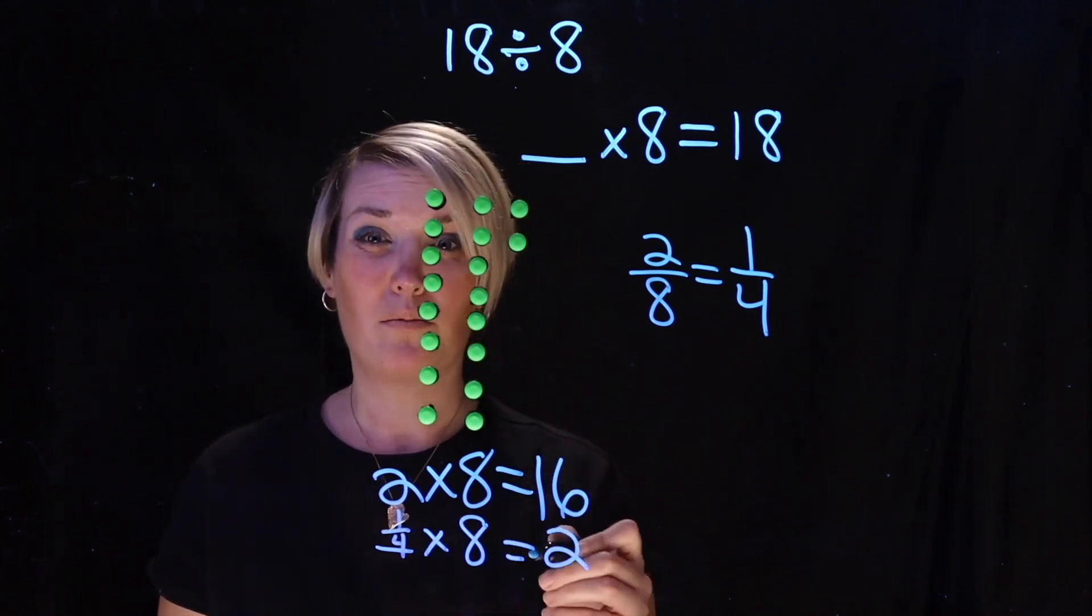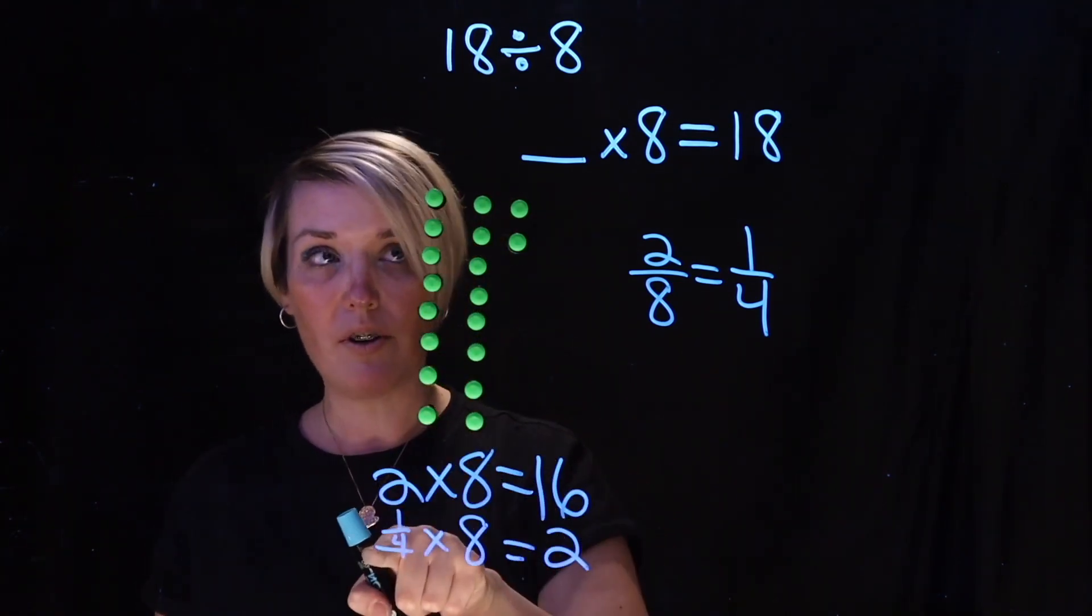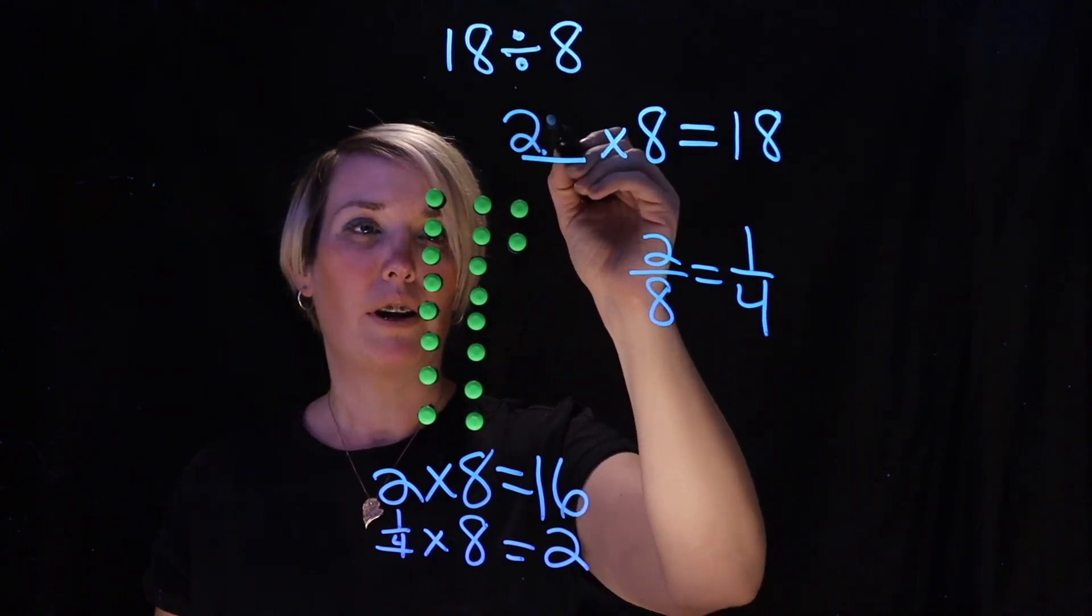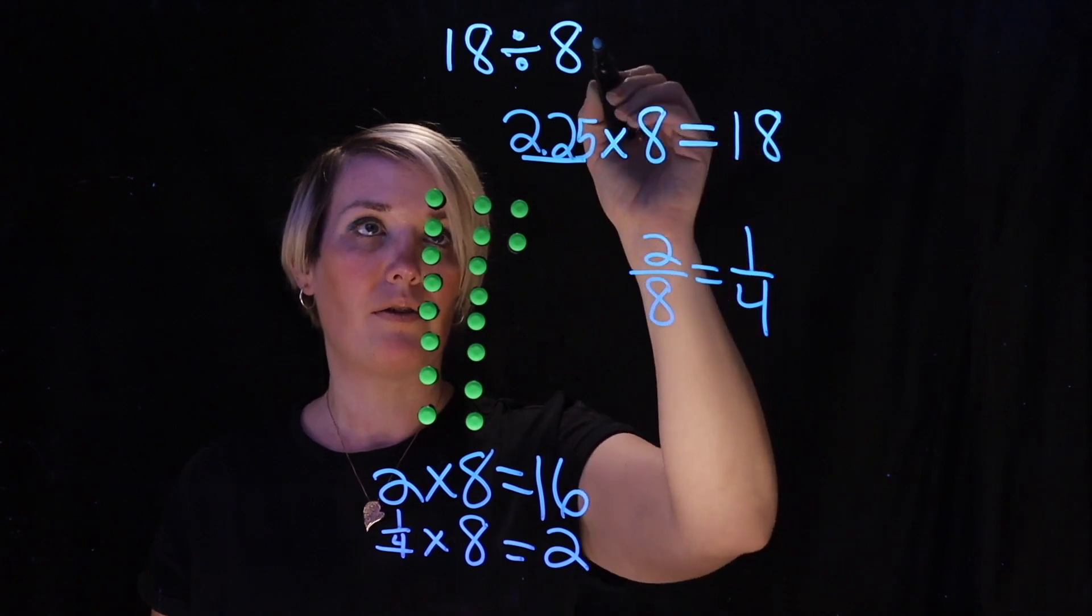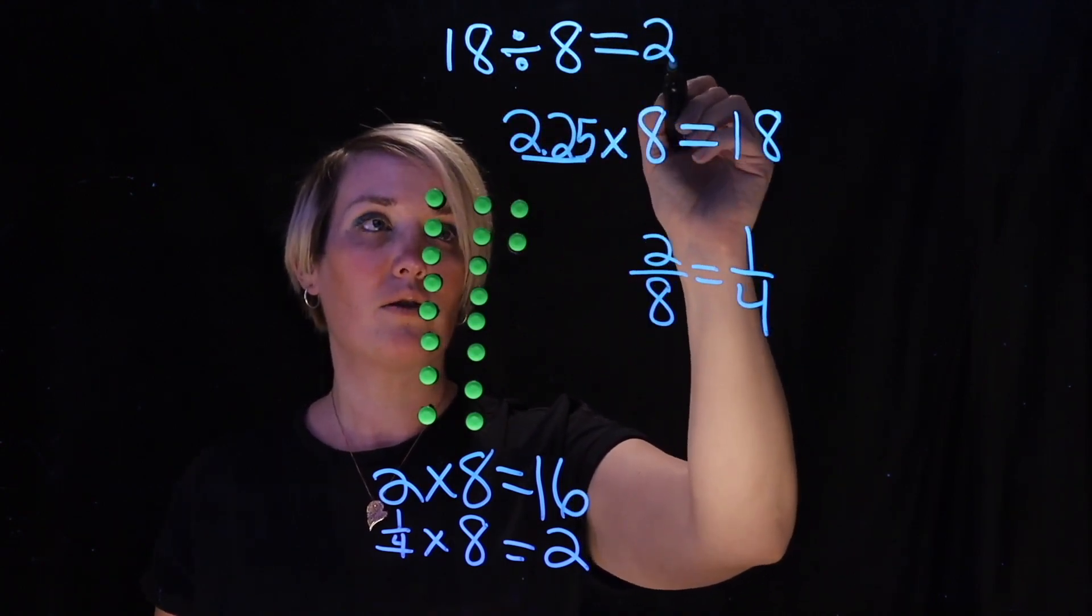He also told me that a quarter is 0.25. So he said if I do 2 plus 0.25 he's going to get 18. So 2.25 times 8 equals 18. So 18 divided by 8 is 2.25.